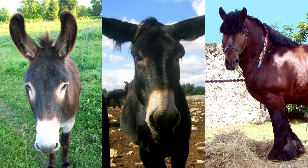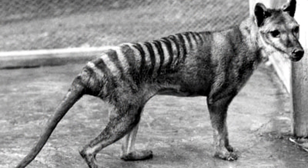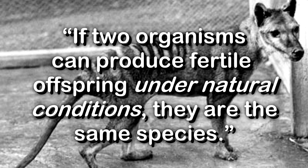One thing that messes up this definition is humans. We can put species in the lab and force them to reproduce or splice their genes together and make a hybrid, but this shouldn't count. So the definition had to be revised to two organisms that can produce fertile offspring under natural conditions.